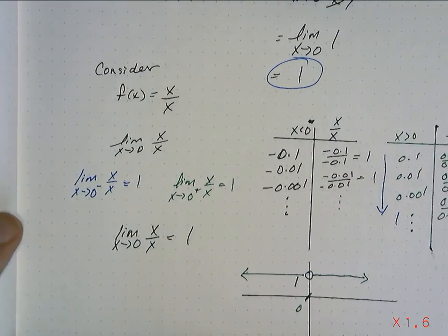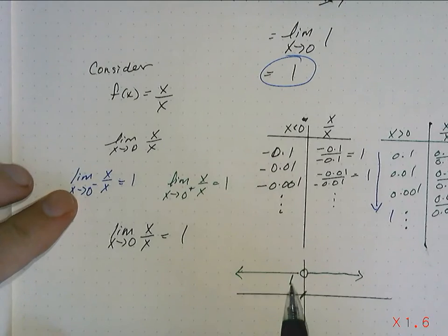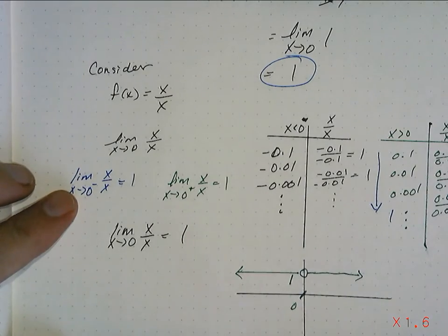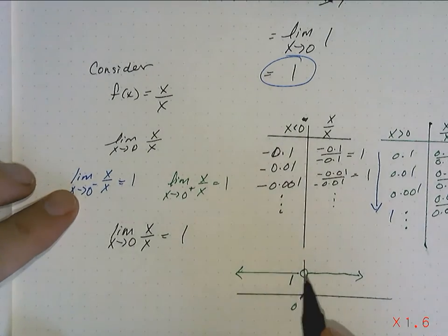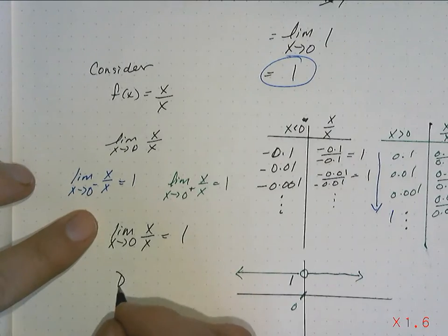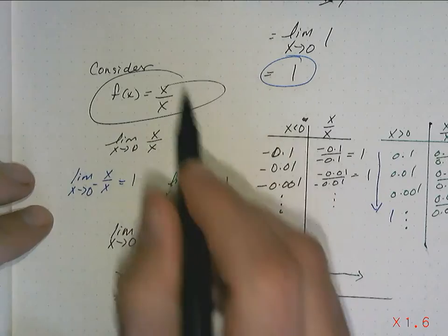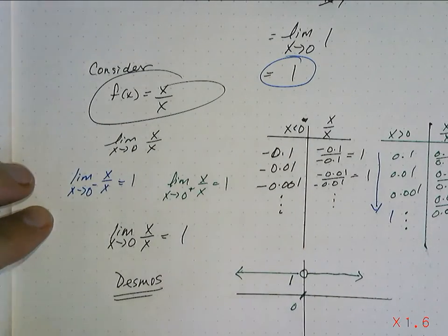And you can put that into Desmos if you want. Be careful with Desmos, because it won't show the open circle. Desmos can't show the open circle. So you have to go to the chart, and the chart will show you that there's an undefined value here. So you can use Desmos to sketch this puppy. So go to Desmos, sketch that puppy.